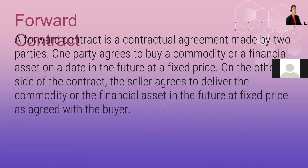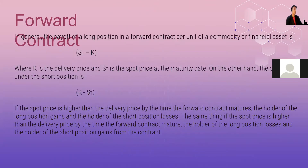A forward contract is a contractual agreement made by two parties. One party agrees to buy a commodity or financial asset on a future date at a fixed price. In general, the payoff of a long position in a forward contract per unit of a commodity or financial asset is ST minus K, where K is the delivery price and ST is the spot price at the maturity date.